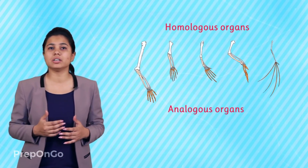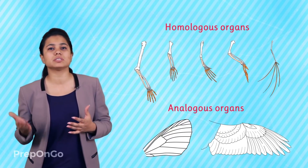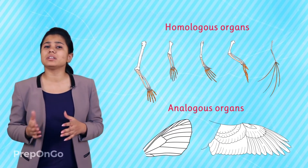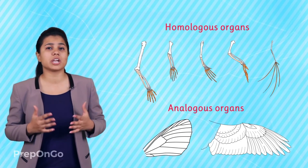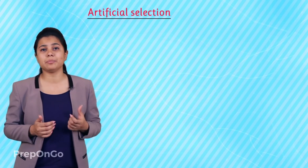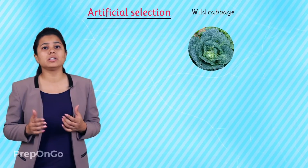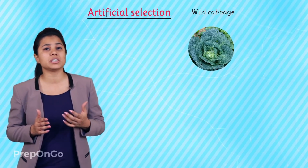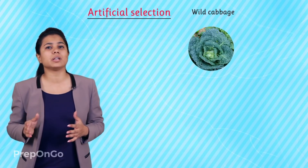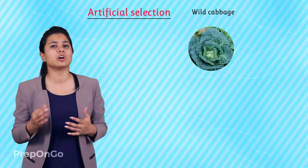In our last video we had learned about homologous and analogous organs and have seen that very dissimilar-looking structures have evolved from a common ancestral design. But this was all guesswork about what had happened in history. Are there any current examples that show that such evolution can happen? We are now going to see an example where a new organism can be created from the very same basic design of the ancestor. The wild cabbage plant, which is used as a food plant by human beings, is an example where new species have been created from an existing one by the process of evolution — the only difference is that we are using artificial selection instead of natural selection.